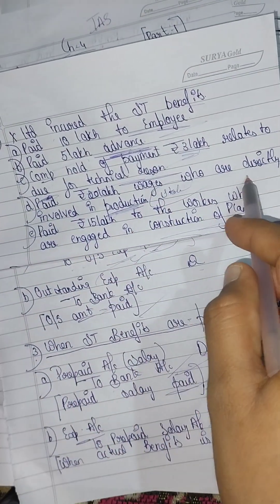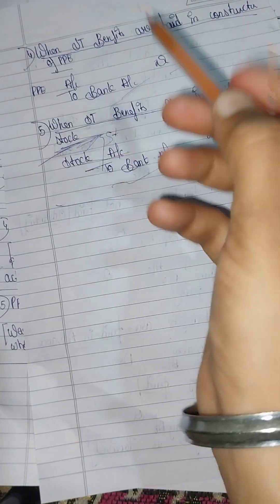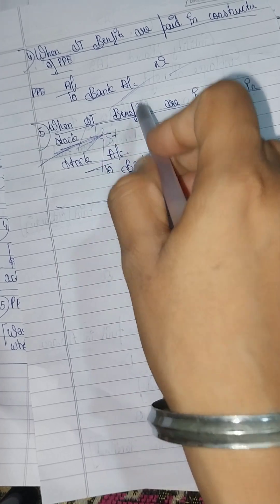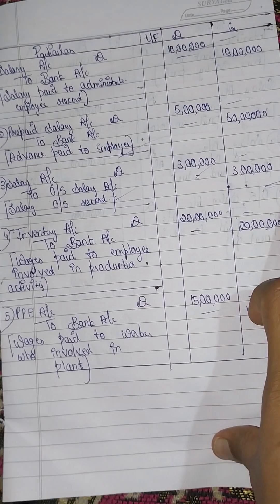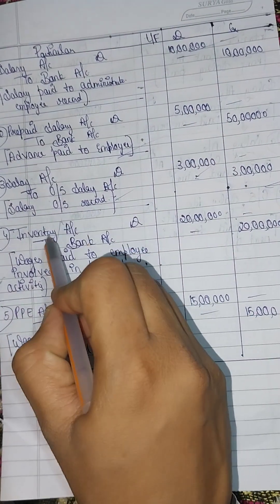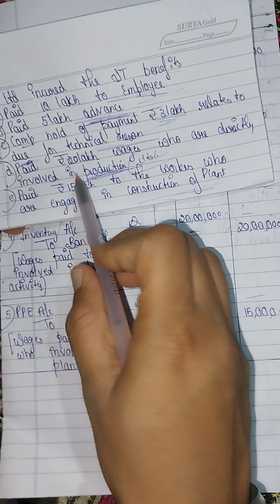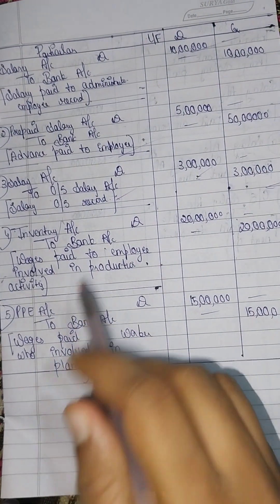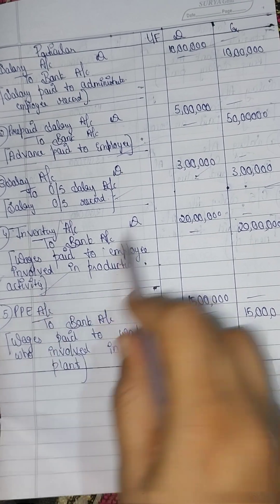Next, paid rupees 20 lakh wages to workers who are directly involved in production. This relates to stock and inventories and production activities. The entry is: stock account debit to bank account, as it is 20 lakh rupees. Narration: wages paid to employees involved in production activities.